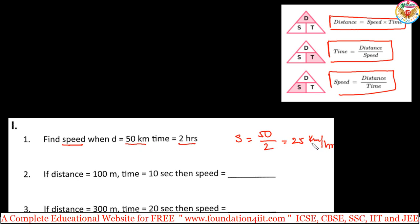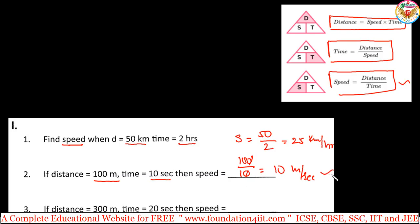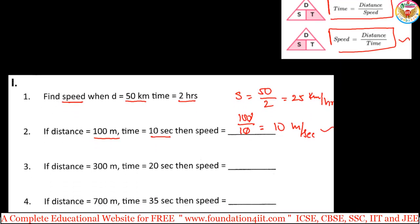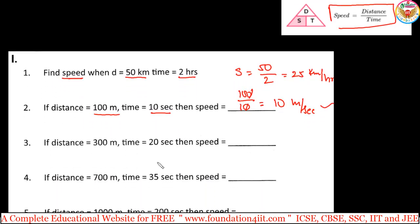Next example in meters per second: if distance is 100 meters and time is 10 seconds, what is the speed? Speed equals distance by time — 100 divided by 10, cancel the zeros, giving 10. So the speed is 10 meters per second, because the distance is in meters and time is in seconds.